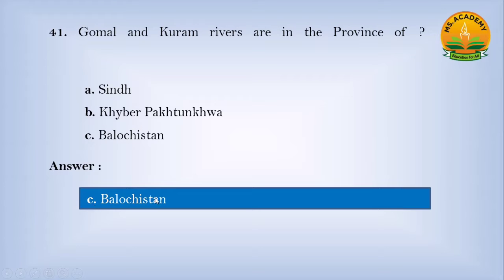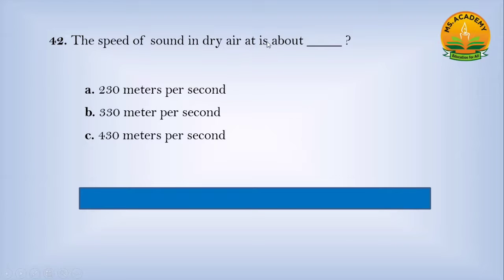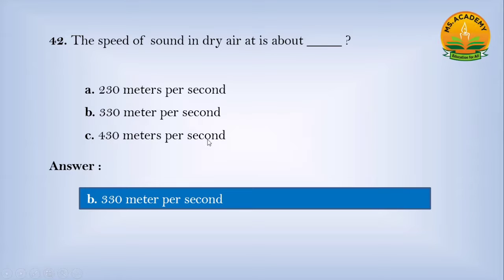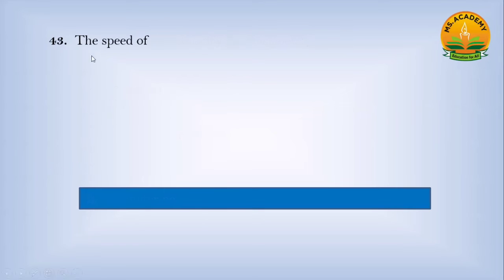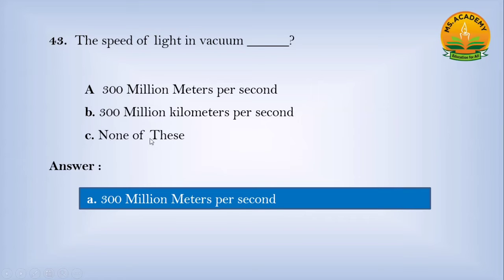The speed of sound in dry air is about: option A 230 meters per second, option B 330 meters per second, option C 430 meters per second — answer is B, 330 meters per second. The speed of light in vacuum: option A 300 million meters per second, option B 300 kilometers per second, option C none of these — answer is A, 300 million meters per second.